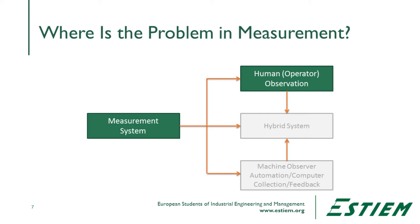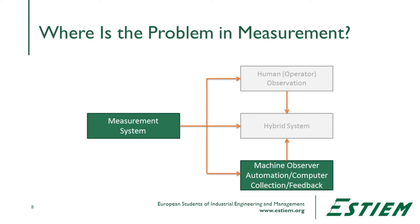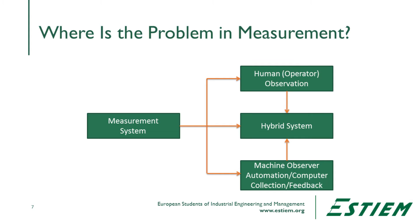Measurement systems usually have two components. One is the human operator — the person observing, recording, and interfacing with a device. The second is the machine, device, or automated computer system that's collecting data or providing feedback. In a hybrid system we'll have both: a device and the human being interpreting it and recording the information.